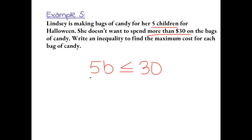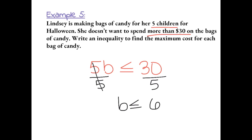We can solve this by dividing both sides by 5, and we're left with B is less than or equal to 6. So each bag has to cost $6 or less for her to not exceed her $30 budget.